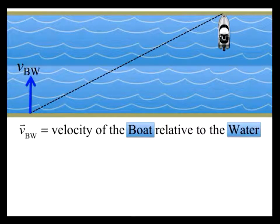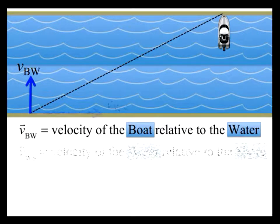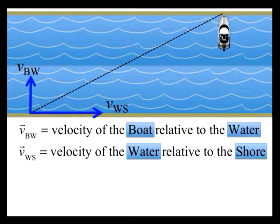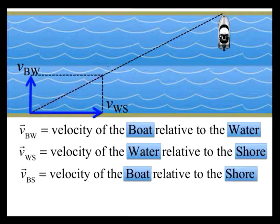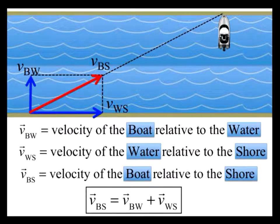First, we have VBW, which is the velocity of the boat relative to the water, and VWS, which is the velocity of the water relative to the shore, and finally VBS, which is the velocity of the boat relative to the shore. The following vector equation correctly describes the boat's motion: Vector VBS is equal to VBW plus VWS. Notice how the ordering of the subscripts works out to give the net velocity vector of the boat relative to the shore.